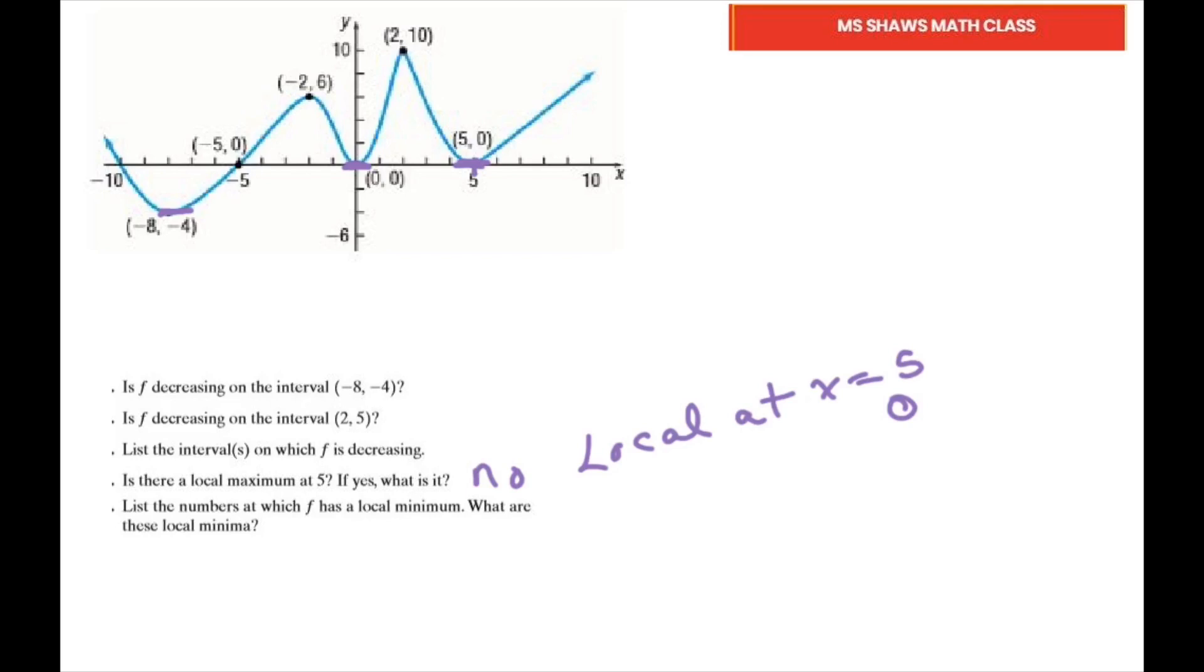List the numbers at which F has a local minimum. The local minimums are in purple here: at x = -8, x = 0, and x = 5.